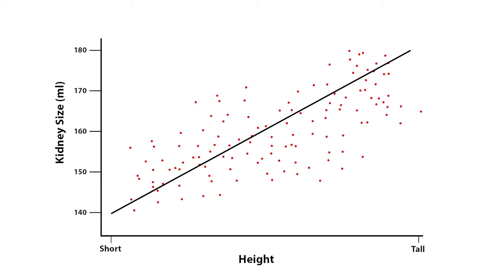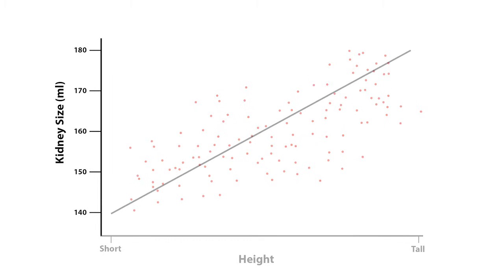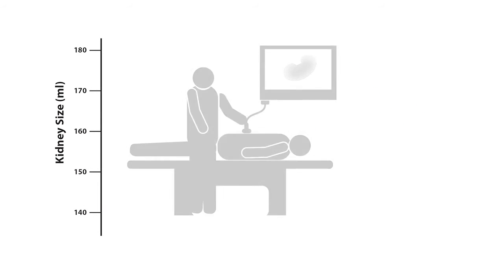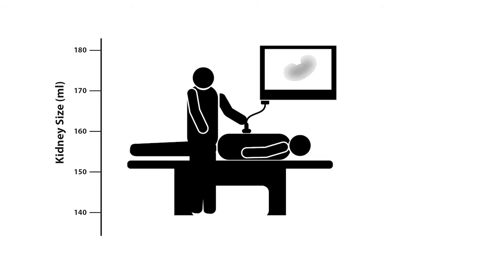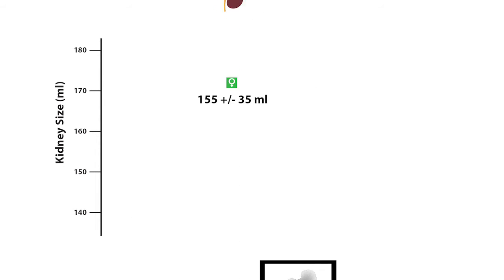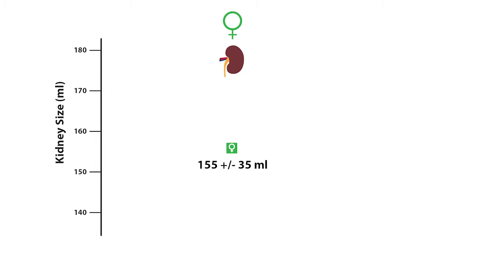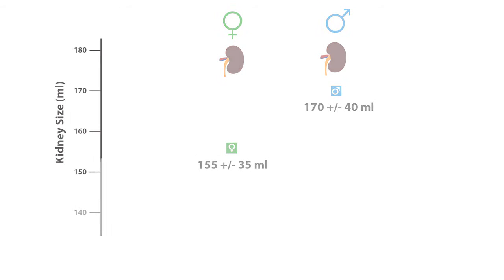For example, one study that used ultrasound to measure kidney volumes in milliliters found that the average kidney volume was 155 plus or minus 35 milliliters for females, and 170 plus or minus 40 milliliters for males.